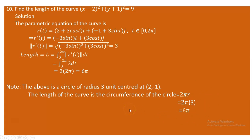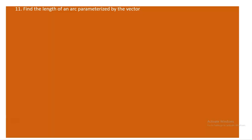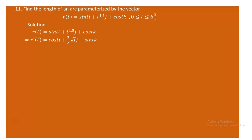Next is question 11, which again asks for the determination of the length of a curve parameterized by the vector r(t). As usual, we follow the standard steps. Your r(t) is sin(t)i + t^(3/2)j + cos(t)k, and t ranges from 0 to 20/3, because 3 times 6 is 18, and 18 plus 2 is 20, giving 20/3.